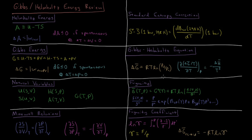Fugacity helps us express the pressure dependence of non-ideal gases in terms of an effective pressure. The molar Gibbs energy as a function of temperature and pressure equals the standard Gibbs energy at that temperature plus RT times the natural log of fugacity divided by standard fugacity. The fugacity is the actual pressure times the exponential of the virial expansion terms — second virial coefficient times pressure, third virial coefficient times pressure squared, and so on.